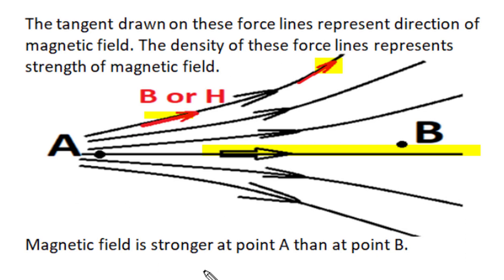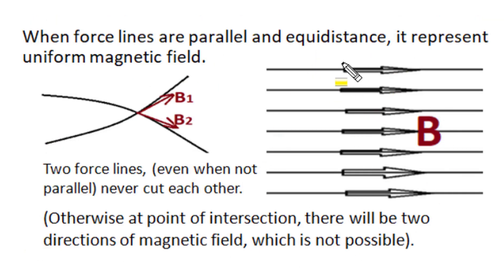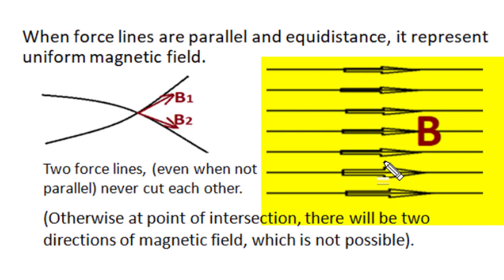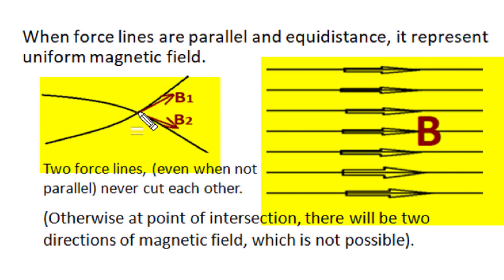At position A, the magnetic field is stronger compared to position B in this configuration. When magnetic force lines are parallel and equidistant, this represents a uniform magnetic field where both direction and strength are the same everywhere. In a non-uniform magnetic field, force lines may not be parallel, but even then they will never intercept each other, because at a cut point two tangential directions would indicate two values of magnetic field at one location simultaneously, which is not possible. So two magnetic force lines, or two electric force lines, never cut each other.